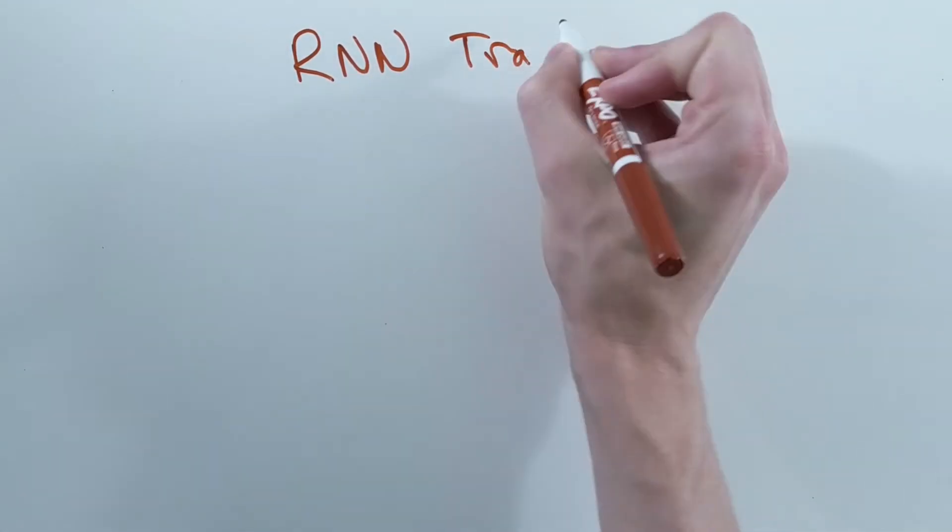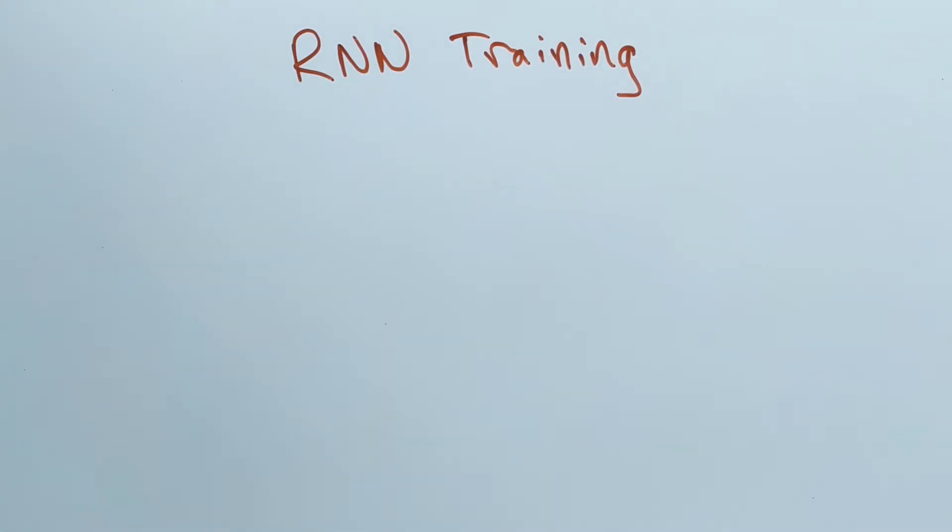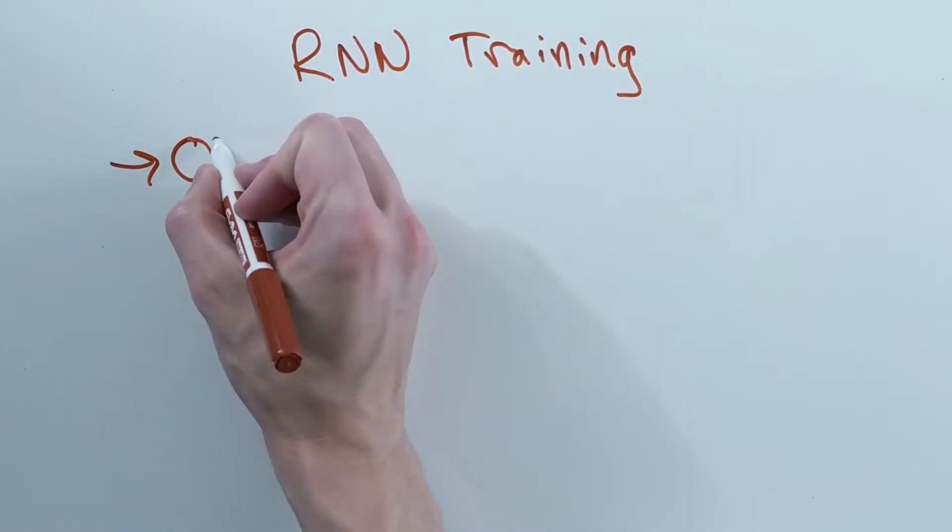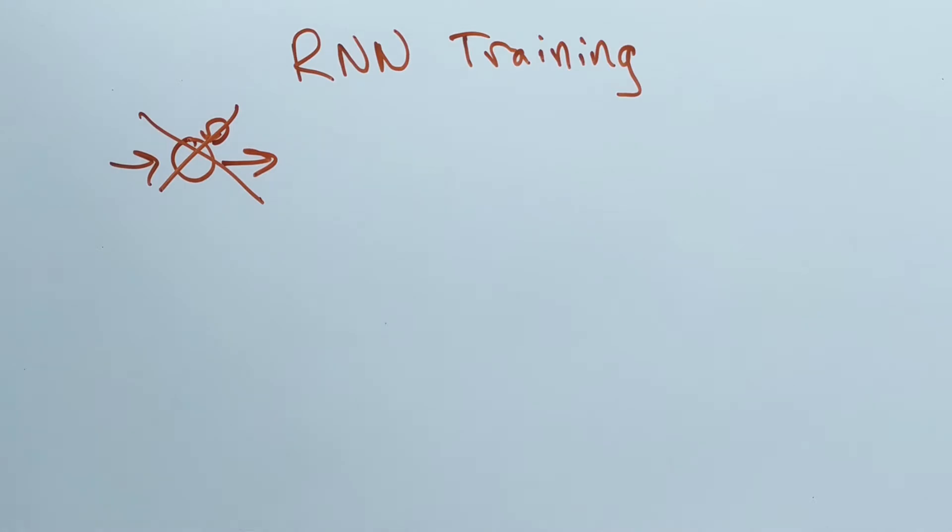The other important thing to understand in RNN implementation is how they are trained. During training, most methods don't understand how to deal with loops.